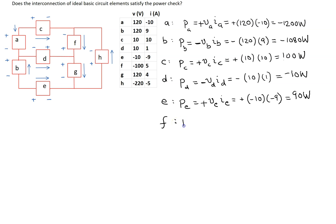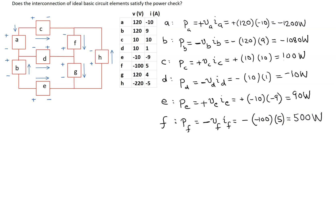Looking at element F, power is voltage times current, P_F = V_F × I_F. For element F, the reference current is entering the terminal marked negative, so we use a minus sign here. Substituting the values: minus 100 times 5 gives 500 watts. This is a positive value, so element F is also absorbing power.